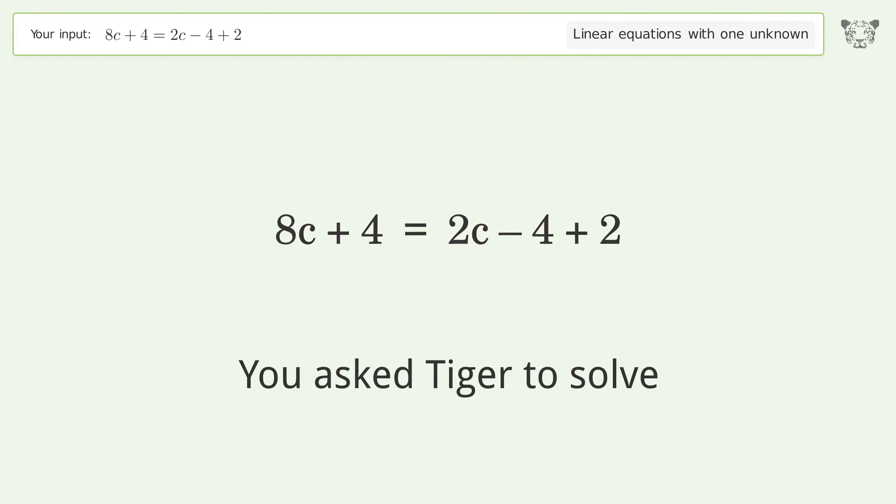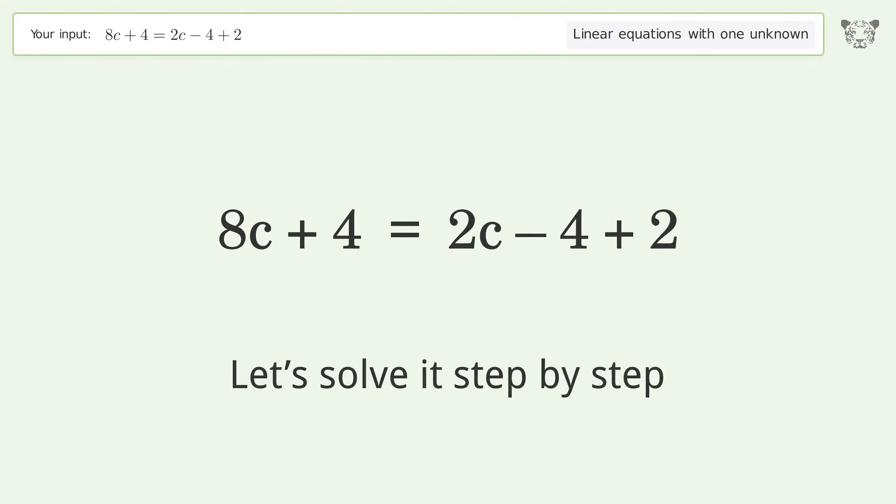You asked Tiger to solve this linear equation with one unknown. The final result is c equals negative one. Let's solve it step by step.